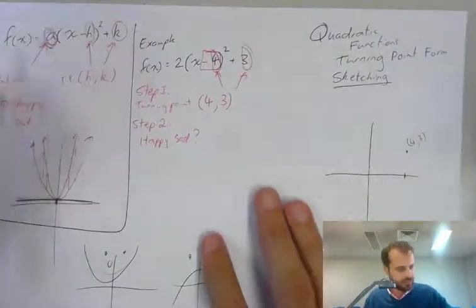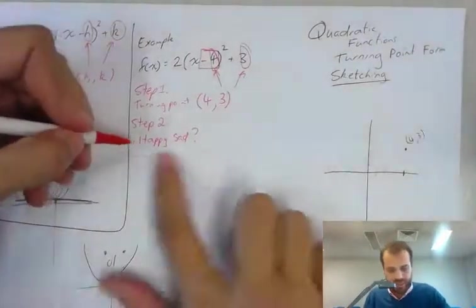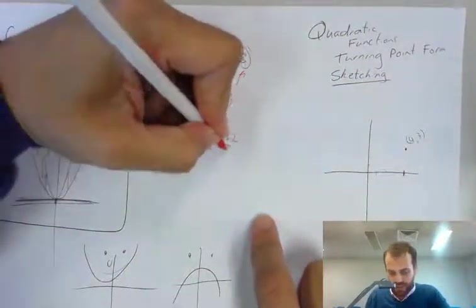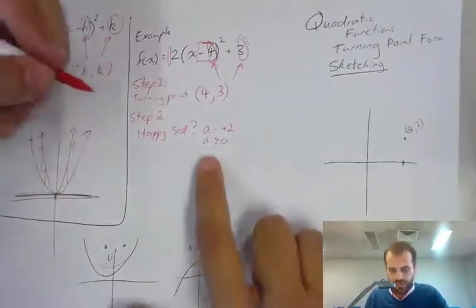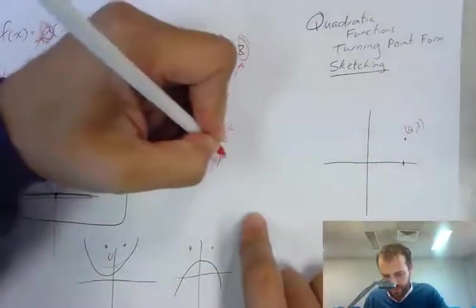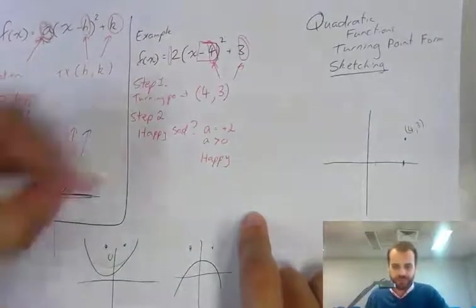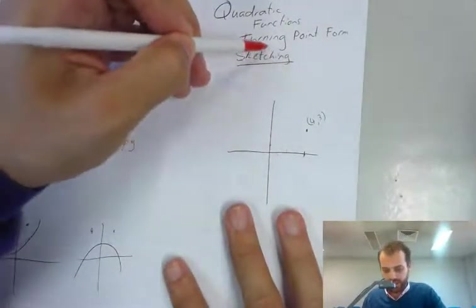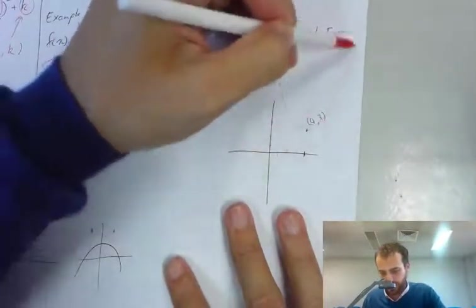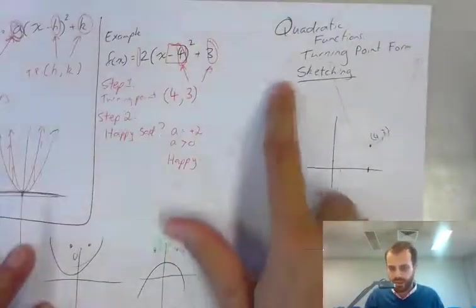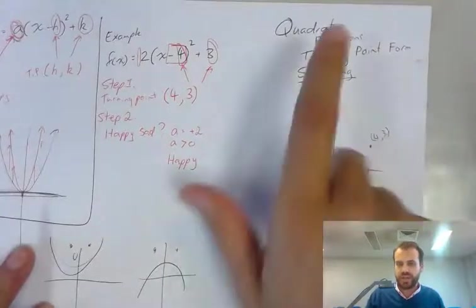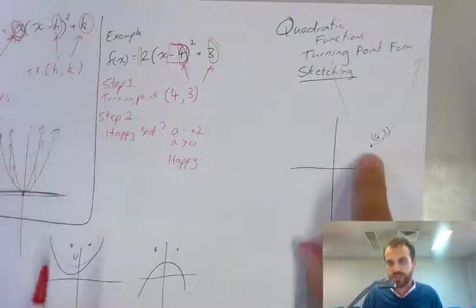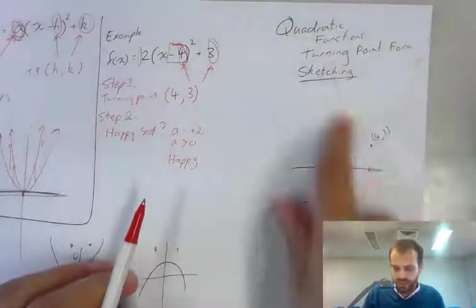So with this one, I look here, happy or sad, the a value, a equals positive 2. That means that a is greater than 0, which means that this is going to be a happy quadratic. Okay, there's step 2. So I'm just going to draw in something really light here. Happy face. It's going to change as I go, but now I know that it's got a turning point here. The turning point is called a minimum because it's down at the bottom here, and it looks like this.